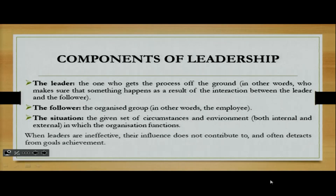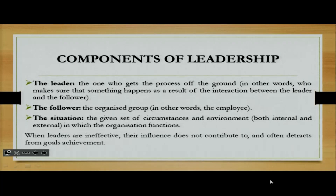Now we're going to look at the different components of leadership. We have what we refer to as a leader, we have what we refer to as a follower, and we also have the situation, which is probably the environment. The leader is the person who gets the process going — who makes sure that something happens as a result of the interaction between the leader and the follower. The follower is the organized group, perhaps your employees. The situation is the given set of circumstances as well as the environment, both internal and external, in which the organization functions.